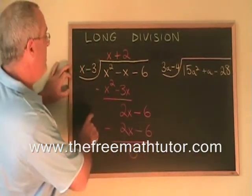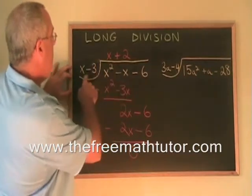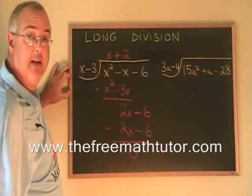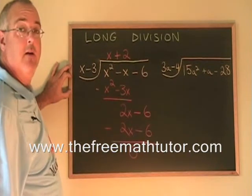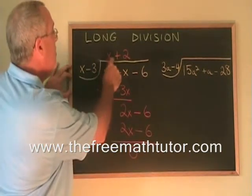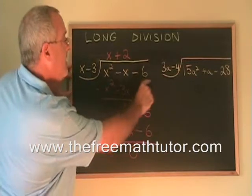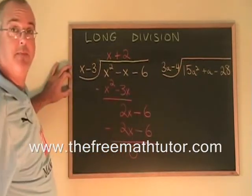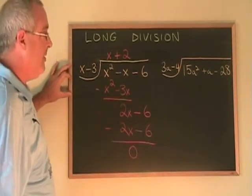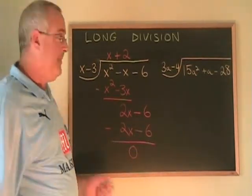That means this trinomial divided by x minus 3 gives x plus 2 as its answer. You can verify by multiplying these two binomials together and make sure that you get this trinomial. Let's look at the second example, which is a little bit more complicated.